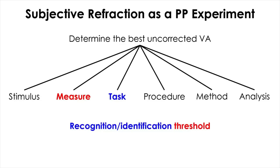In that task, what you are measuring is called a recognition or identification threshold, where the patient's job is to correctly identify or recognize the letter presented. The aspect of vision being tested is the size of the letter — the size of the visual stimulus — and that's what's changing during the process. What we are measuring here is called the absolute threshold; in other words, the smallest letter size the patient can correctly identify.